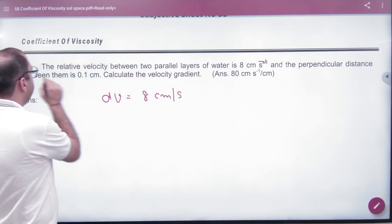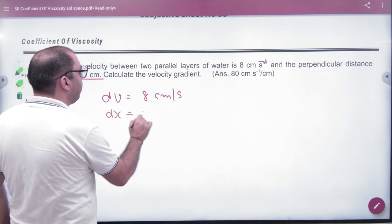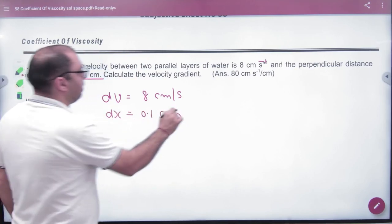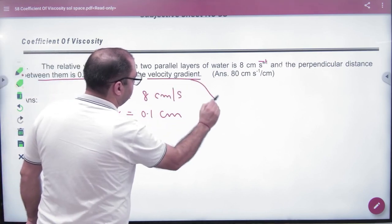And perpendicular distance between them is 0.1 cm. What is perpendicular distance? Dx value is 0.1 cm. What should we take? Velocity gradient. What is velocity gradient? What is the formula?